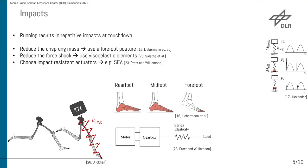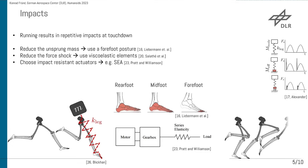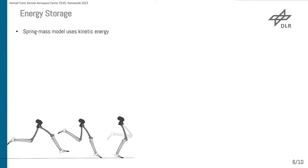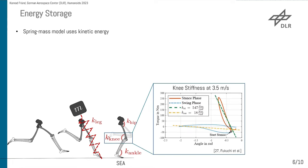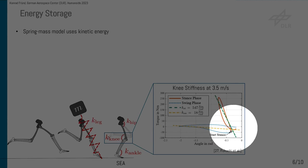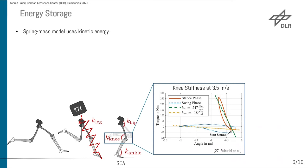Now let's go to the next bioinspired fundamental, which is about energy storage. We are again using the spring-mass model, which uses kinetic energy. Due to our series elastic actuation, we have springs in each joint, and these sum up to a virtual linear leg stiffness. Taking a look at the knee stiffness of a human at 3.5 m/s, there is a stance phase in orange and a swing phase in dotted blue. The stance phase is quite stiff at 547 Nm/rad, while the swing phase is nearly slack at 80 Nm/rad.